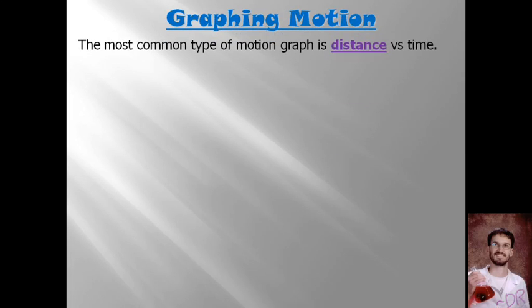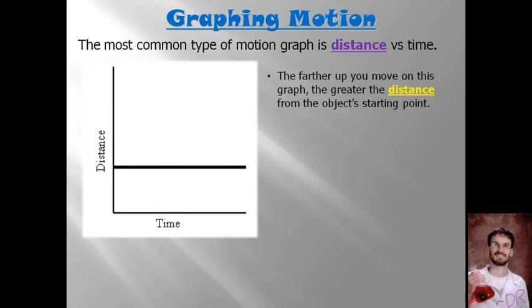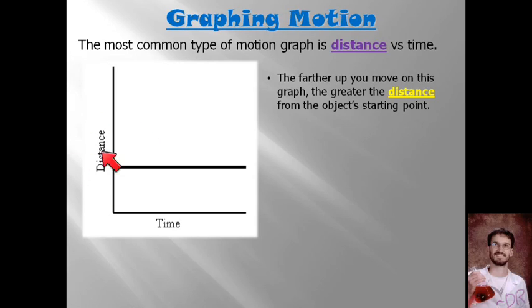The most common form of a graph for motion is called a distance versus time graph. We will also in the future be looking at a speed versus time graph, but the most basic that we're going to start with is a distance versus time graph. That means it's a graph that has distance on the y-axis, time on the x-axis.